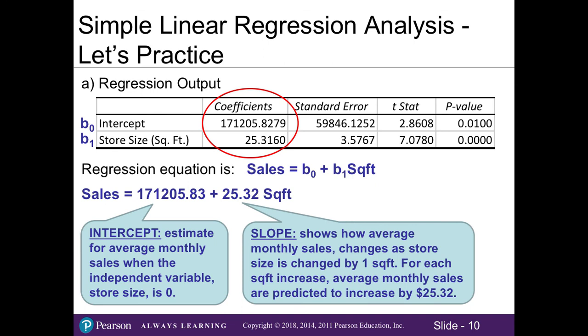What's more important is the slope. This 25.32 regarding our square footage or store size - the slope shows us how the average monthly sales will change as our store size is changed by one square foot. We know this is a positive increase. So for each square foot increase, the average monthly sales are also predicted to increase. Specifically, it will increase by $25.32.